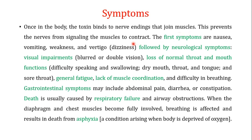This prevents the nerves from signaling the muscles to contract. The first symptoms are nausea, vomiting, weakness, and vertigo (dizziness). These are followed by neurological symptoms: visual impairments including blurred or double vision, loss of normal throat and mouth functions, difficulty speaking and swallowing, dry mouth, throat and tongue, sore throat, general fatigue, lack of muscle coordination, and difficulty in breathing.